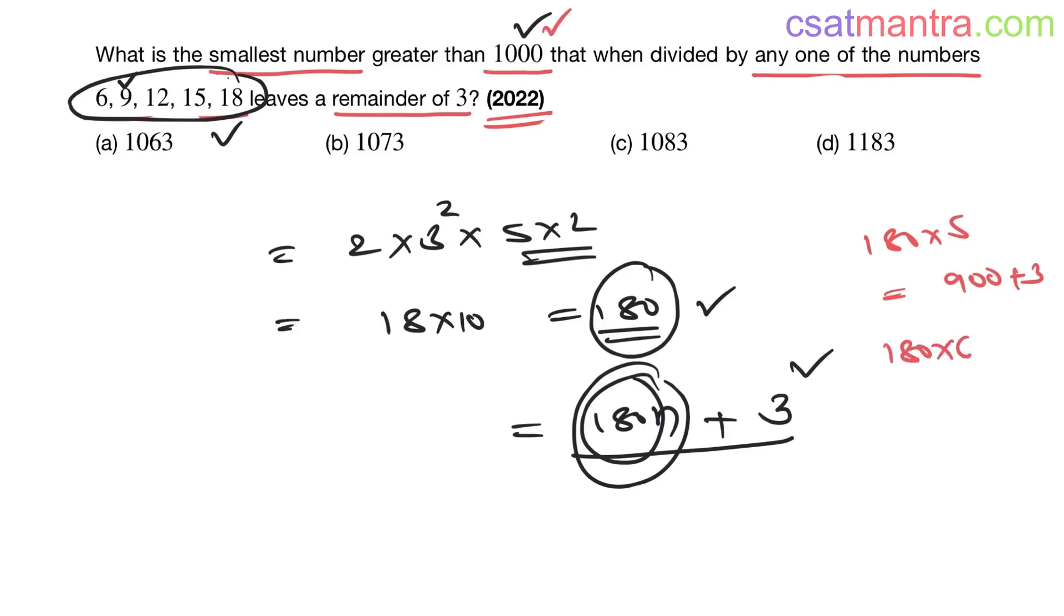So answer is C, 1083. For n = 6, I have to add one more 180 to 900, that is 1080. 1080 + 3 = 1083. This is the conventional way. If you want to use the shortcut, that's how you do it.